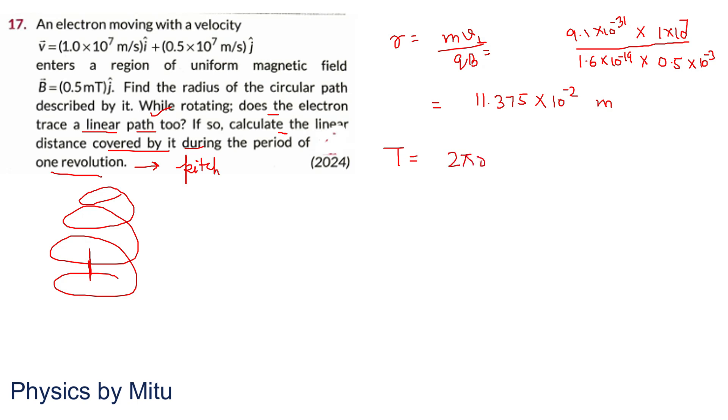What is time period? Distance upon speed. 2 pi R upon velocity. 2 pi R is the circumference of the circle. Which component of velocity will you take? The perpendicular component which causes circular motion.